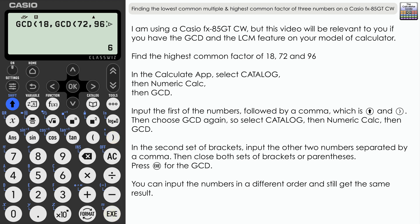Close two sets of brackets or parentheses, Execute, and there we have the highest common factor: 6. So there we go, a method that we can use the GCD and the LCM feature on the calculator to find either the highest common factor or the lowest common multiple of three numbers rather than two.